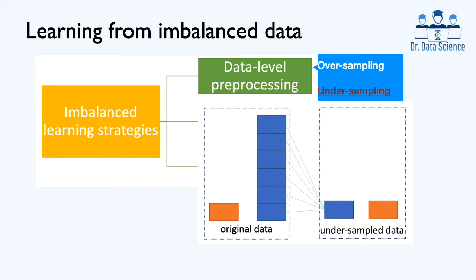In this video, we mainly discuss undersampling techniques which remove samples from the training dataset that belong to the majority class in order to better balance the class distribution. The simplest undersampling technique involves randomly selecting examples from the majority class and deleting them from the training dataset.